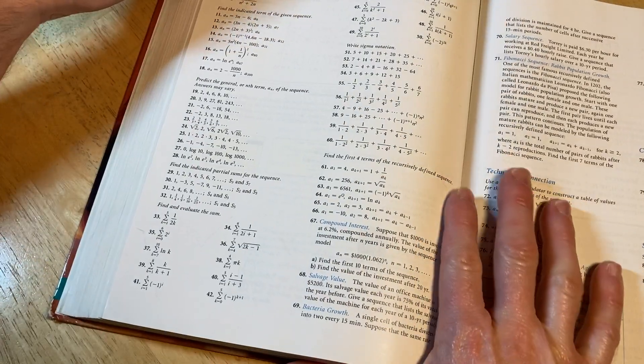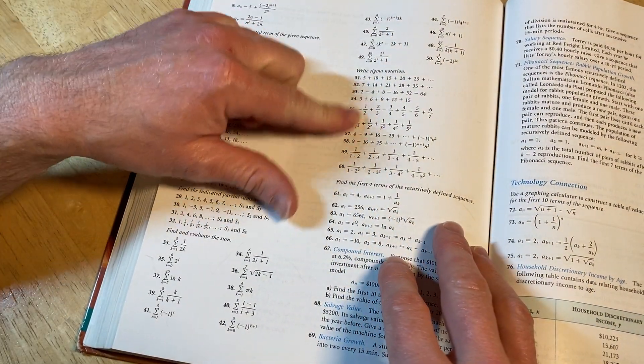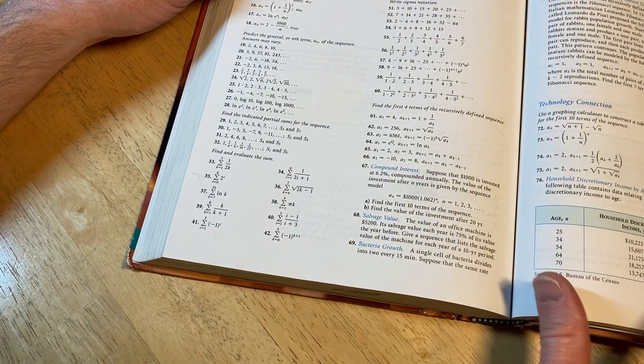Sequences, series, and combinatorics. This is something you do in pre-calc. Writing in sigma notation. That's really important. Finding and evaluating sums. So you can get a book like this, get some courses.